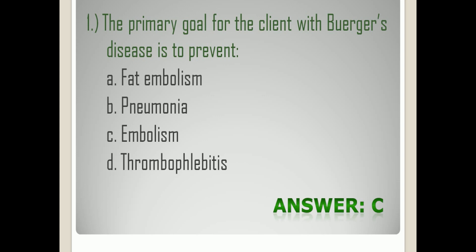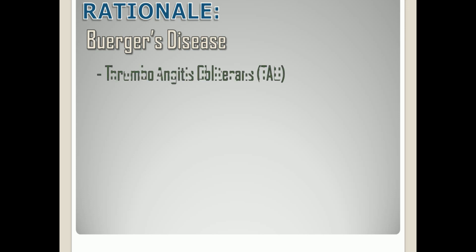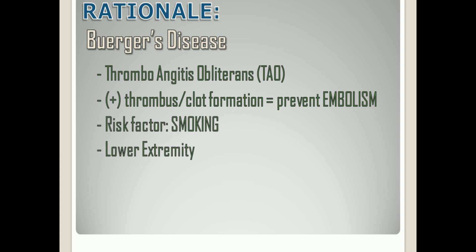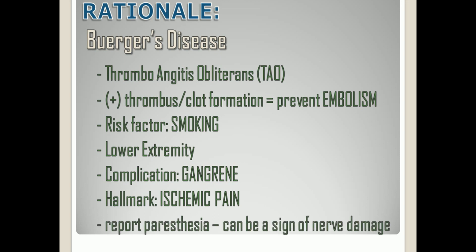The correct answer is letter C. Rationale: Berger's disease is also called thromboangitis obliterans. Thrombo means there's a clot formation, angitis means there's an arterial inflammation, and obliterans means obstruction. Since there is already a thrombus or clot formation, our primary goal is to prevent it from becoming an emboli which can be dislodged in different parts of the body and can be fatal if left untreated. The cause is still unknown, but the major risk factor is smoking. The most common affected part of the body is the lower extremity due to insufficient flow of blood, and the most common complication is the presence of gangrene. Its hallmark is ischemic pain. Instruct the patient to report paresthesia, characterized by numbness and tingling sensation, which can be a sign of nerve damage.